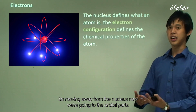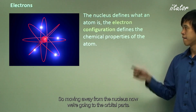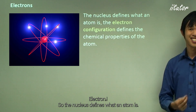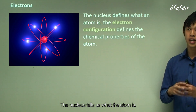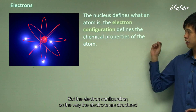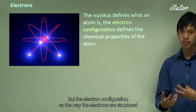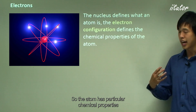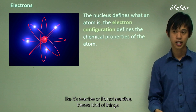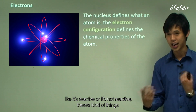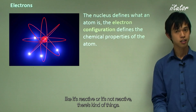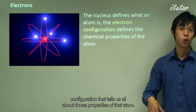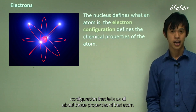Moving away from the nucleus to the orbital parts: the nucleus defines what an atom is, but the electron configuration — the way the electrons are structured — defines the chemical properties of the atom, such as whether it's reactive or not reactive.